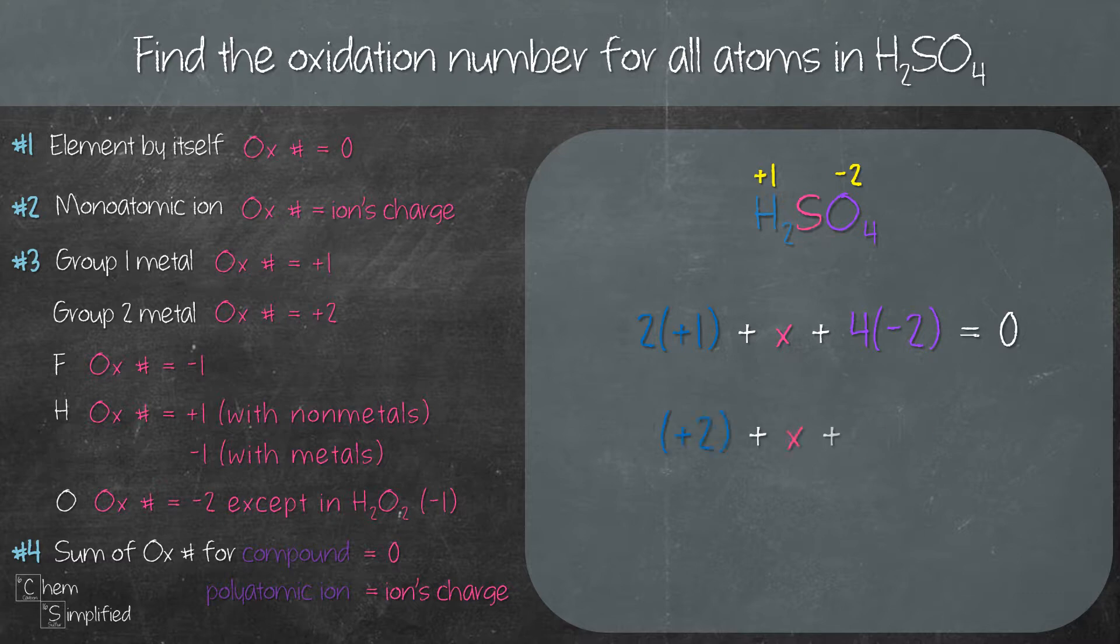So solving that gives us X equals plus six, which means the oxidation number for sulfur is plus six. With that, we found the oxidation number for all the atoms present in sulfuric acid.